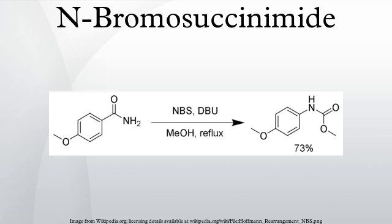The allylic and benzylic radical intermediates formed during this reaction are more stable than other carbon radicals, and the major products are allylic and benzylic bromides. This is also called the Wohl-Ziegler reaction. The carbon tetrachloride must be maintained anhydrous throughout the reaction,